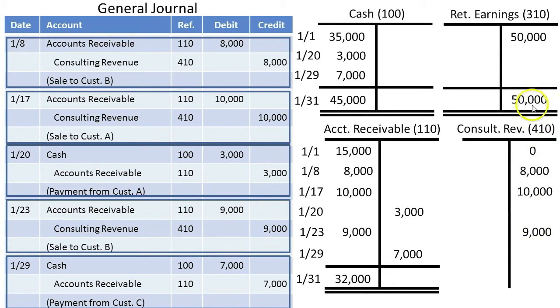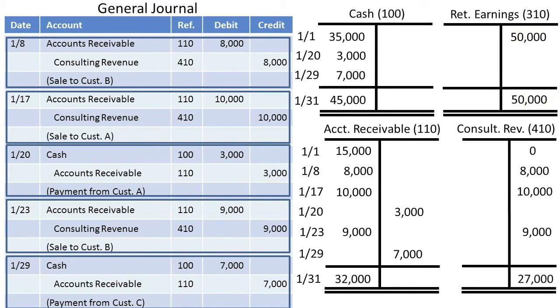Therefore, this credit balance of $50,000 is actually the January 1st balance, which will need to be updated through the closing process. Consulting revenue has a credit of $27,000.